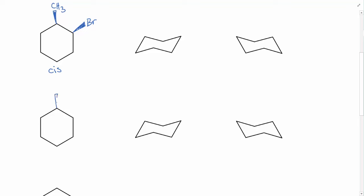If instead one was a wedge — so let's put our CH3 as a wedge — and the Br was a dash, then one of them's coming towards us out of the page, that's the CH3, while the Br is going into the page. So they're on opposite sides of the ring, so we call this trans.